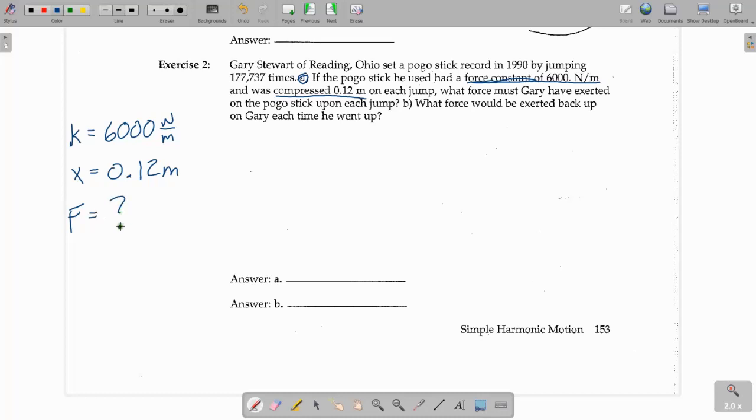So, we are solving for that force. We are going to need to use the equation F equals KX, Hooke's law. So, the restoring force is equal to 6,000 newtons per meter times 0.12 meters. This is going to give us a force of 720 newtons.